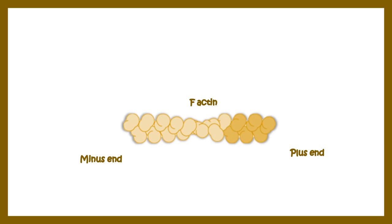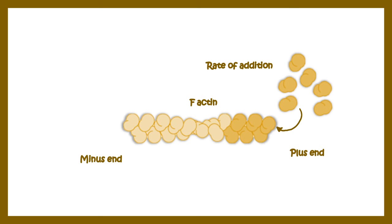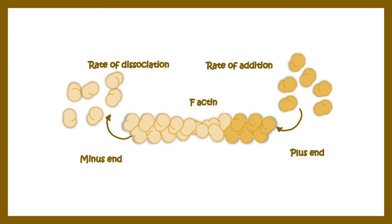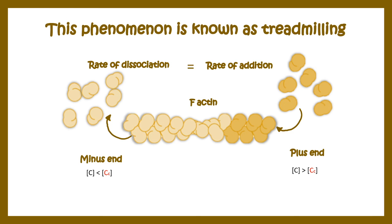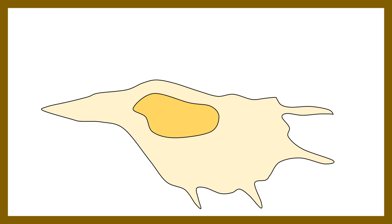In certain situations, the rate of addition becomes equalized to the rate of dissociation — this is known as treadmilling. At the minus end, the concentration is just below the critical concentration, whereas at the plus end it is above the critical concentration. Critical concentration is a particular concentration range crucial for actin filament polymerization. In treadmilling, actin is broken down from one end and polymerized at the other end, resembling a rotating treadmill.